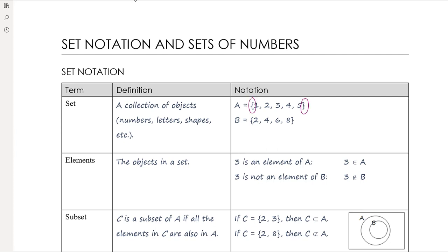Set A comprises the numbers 1, 2, 3, 4, and 5. If we just write A equals 1, 2, 3, 4, or 5 without curly brackets, there's no suggestion that A is a set — we're just saying A could equal one of those values. What we actually mean is A is a collection that includes all of those numbers, so the notation really matters. Similarly, set B is the numbers 2, 4, 6, and 8.